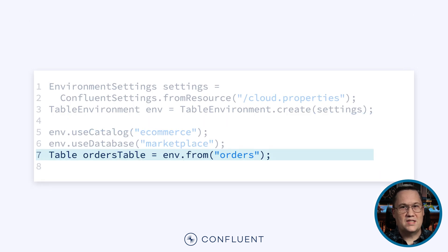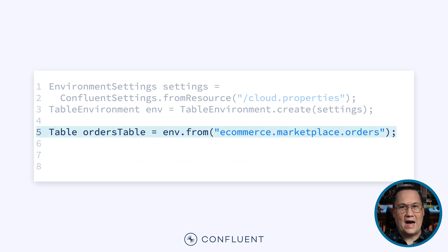With all those pieces in place, we can reference a table using the FROM method in the Table API. However, there are two ways to do that. We can have it look in the default catalog and database, as shown here, or we can provide an absolute path to the table instead. As long as the topic and schemas exist, we can reference the matching table without having to define anything ahead of time.